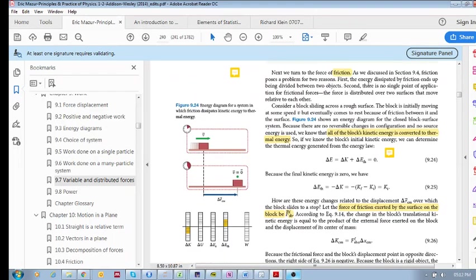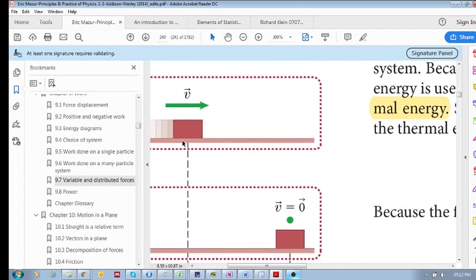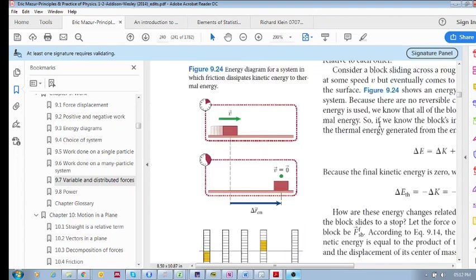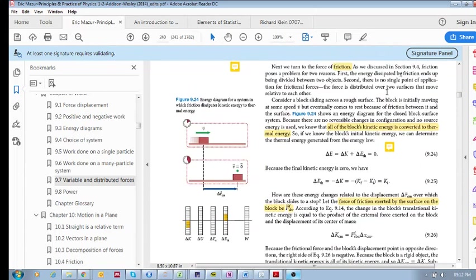Another problem is that there's no single point of application. If I stood here and I pulled here with a rope, you'd have a single point of application. But when it comes to friction, we have a distributed surface. So there's no single point of application. This makes dealing with friction a bit tricky.